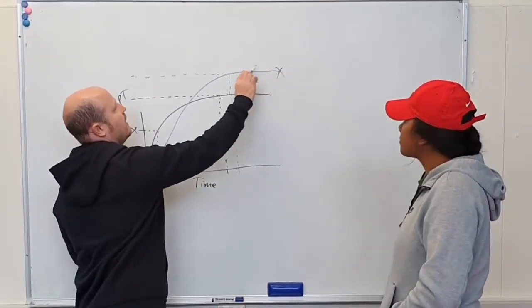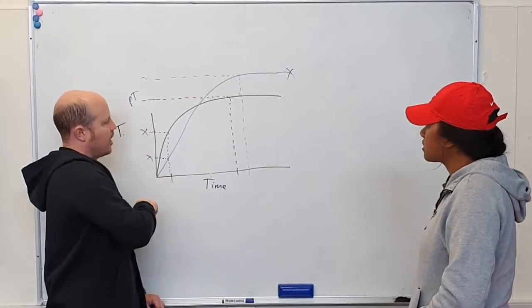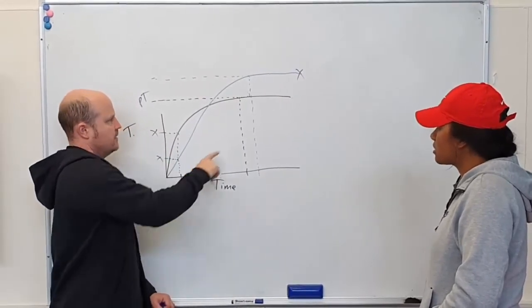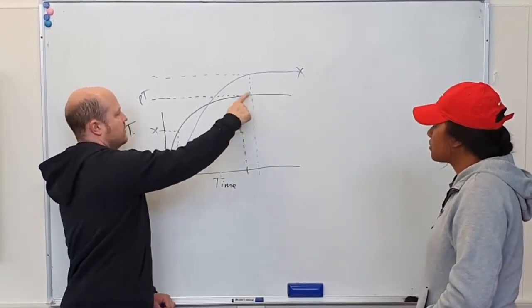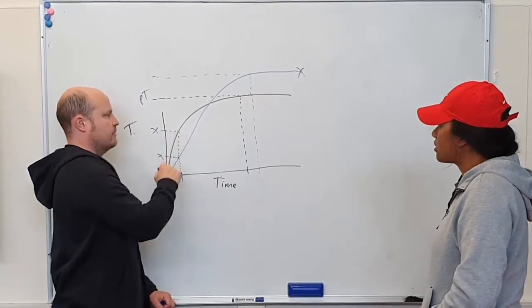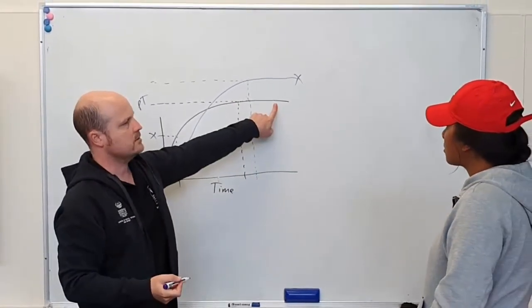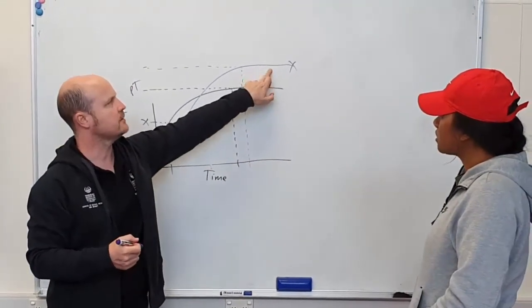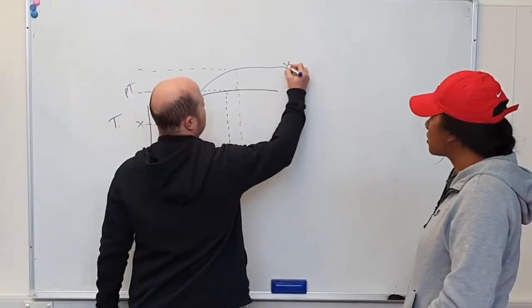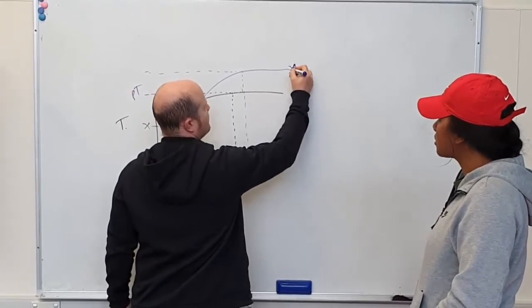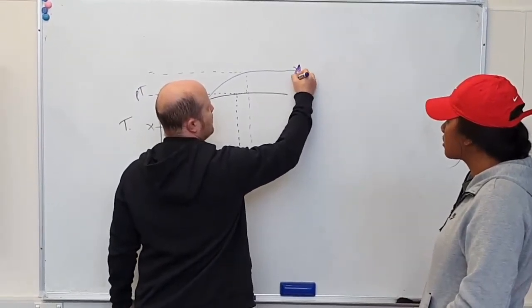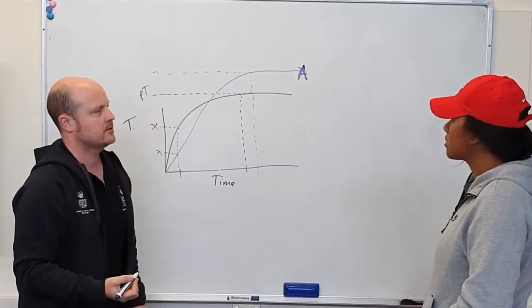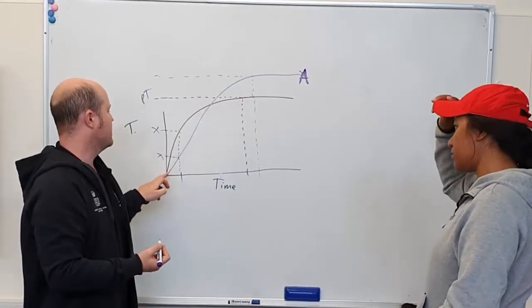So this one, higher peak torque, lower rate of force development. This person, lower peak torque, faster rate of force development. So good at sprints, good at slow strength. This person here, Mr. A, wants to be better at sprinting. He's got great peak torque but poor rate of force development. What type of training does he do?